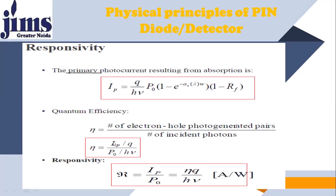If you divide I by Q you get the number of free electrons, and dividing by the number of incident photons (calculated by dividing total power by the power of one photon hμ) gives the quantum efficiency. Responsivity, already known from previous lectures, is output upon input: output in the detector is Ip and input is power. Responsivity depends on frequency μ as well as wavelength, which confirms that the responsivity of a detector depends upon the wavelength of the light.